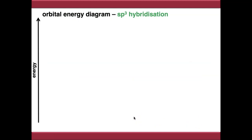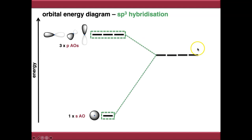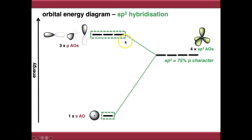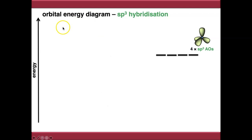Looking at the energy levels: the s atomic orbital is very low in energy, whereas the p orbitals are much higher, and they're all degenerate — the same energy. Mixing everything together gives four degenerate orbitals that are 75% p character, since you've mixed three p orbitals and one s orbital — so 75% p character and 25% s character. The energy of the resulting orbitals is a weighted average of the orbitals that went in. Because we've hybridised these orbitals, we get rid of the unhybridised s and p orbitals. The atomic orbital structure for sp3 hybridised carbon is four degenerate sp3 hybridised atomic orbitals.